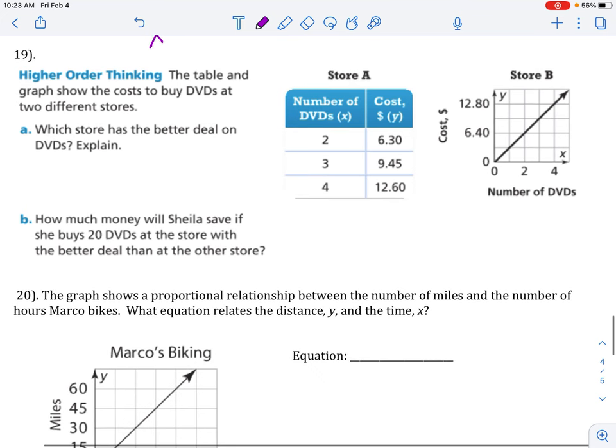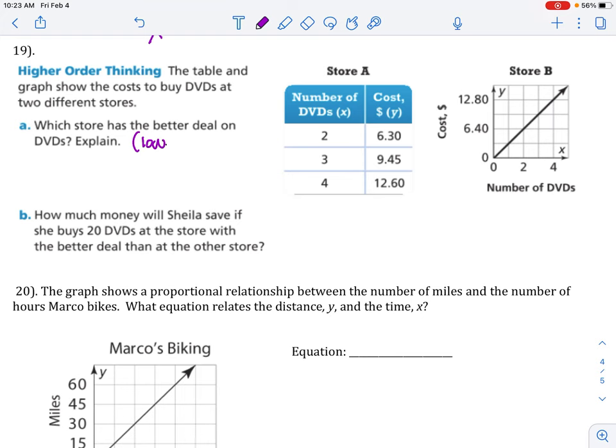Number 19, the table and graph shows the cost to buy DVDs at two different stores. A, which store has the better deal on DVDs? So, that means the lower unit rate. Let's find the unit rate. Here's our x. Here's our y. Let's divide it out. Y divided by x. 6.30 divided by 2 is 3.15. The next row gives you 3.15. So, does the following row. So, what that means is this table is proportional and the unit rate for this table is 3.15.